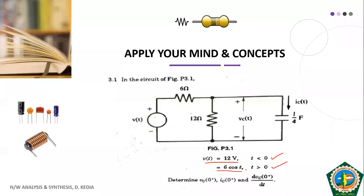If you remember in the previous questions where we had applied a unit step function, for T less than 0 the voltage was 0 and for T greater than 0 unit voltage was there. Here it is different: for T less than 0 we have 12 volt being applied, and for T greater than 0 we have voltage applied as 6 cos T. This means for T less than 0 our circuit has achieved steady state corresponding to 12 volt, and at T equal to 0 our voltage has suddenly changed from 12 volt to 6 cos T.